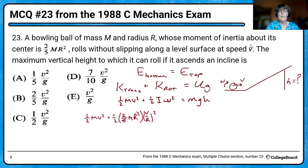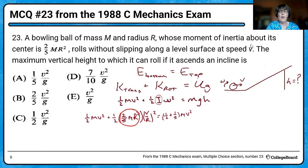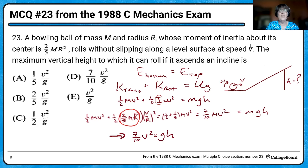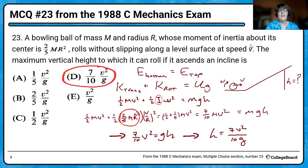We were given I = two-fifths MR squared. Omega and V are related by R: the translational velocity V equals R omega, so omega is V over R. All of that equals our gravitational potential energy. Adding one-half plus one-fifth, I find a common denominator of 10, giving seven-tenths MV squared equals MGH. The masses also go away, and when I solve for how high it will get, I find the answer is seven-tenths V squared over G.